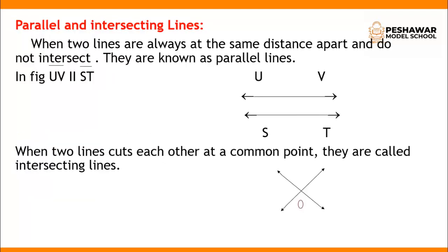Now, having learned about line, line segment, and ray, we will discuss parallel and intersecting lines. Parallel lines: when two lines are always at the same distance apart and do not intersect, they are called parallel lines. In the figure, lines UV and ST are parallel because they are always at the same distance apart and do not intersect. In the figure, UV is parallel to ST.